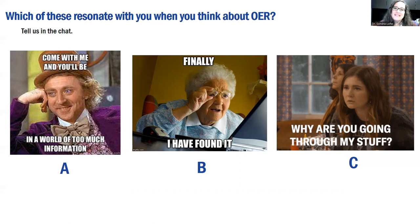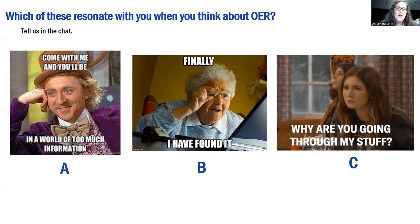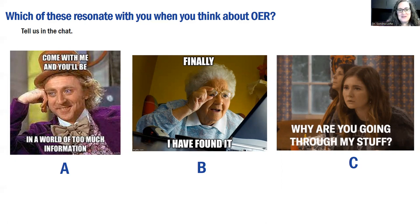We had a couple people pick C. C is what I was thinking of as the publication stage — people find OER and adapt it, and then they really should be publishing their adaptations, giving attribution to the person who created it, or making their own OER. We sometimes feel like it's not good enough, and then there's this protectiveness, like, why are you going through my stuff? So we talked about building confidence in that way.